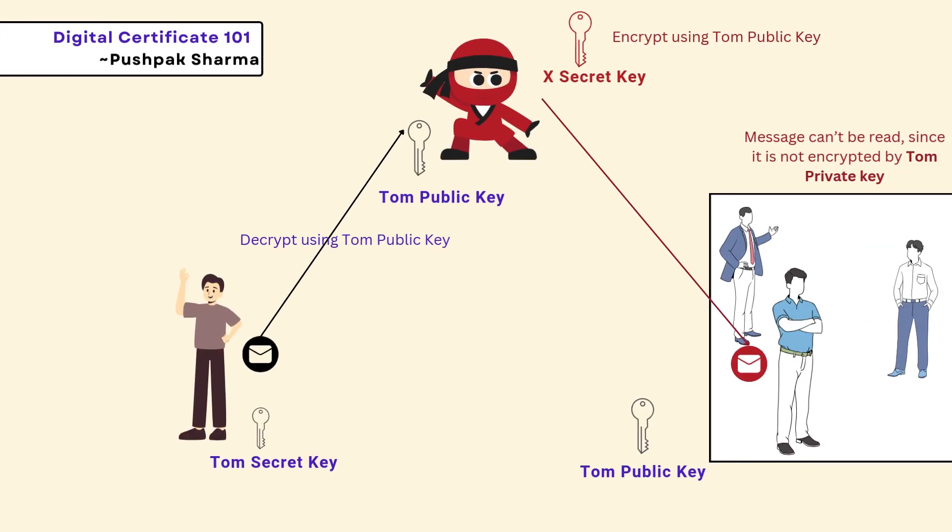Now, if a bad actor X gains access to Tom's public key, X could intercept the email, decrypt it, re-encrypt it using their own private key, and send it to the organization. However, since it's encrypted by X, the organization can't decrypt it with Tom's public key, revealing a man-in-the-middle attack.